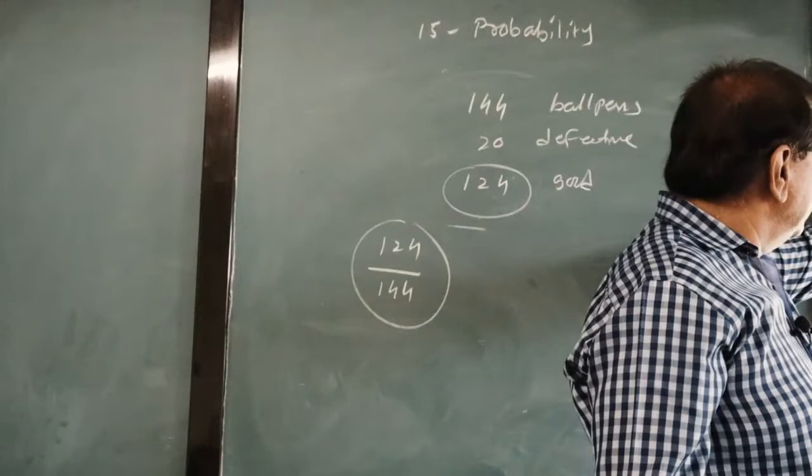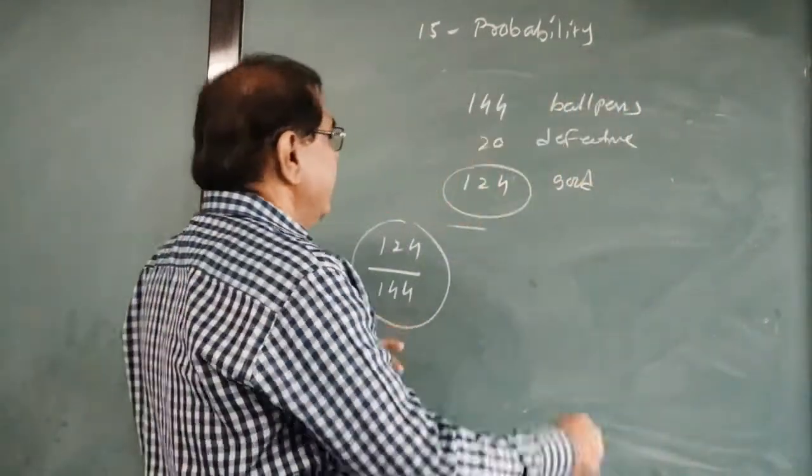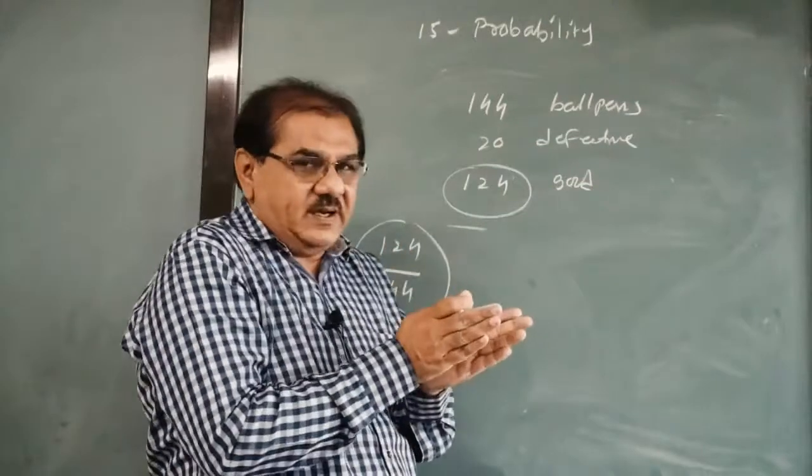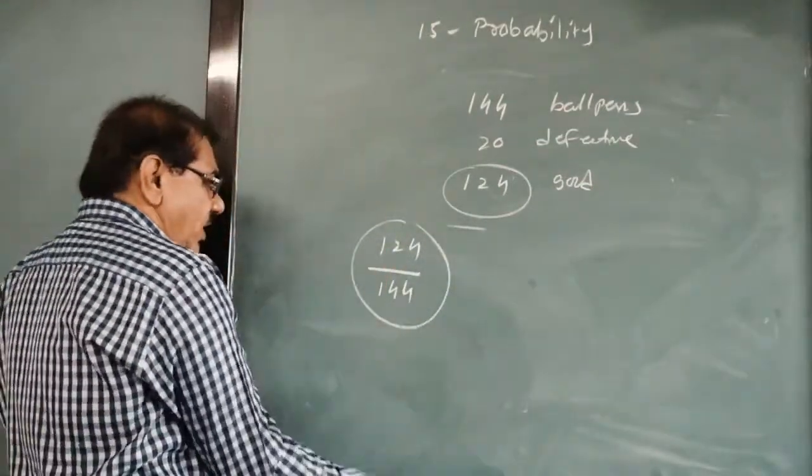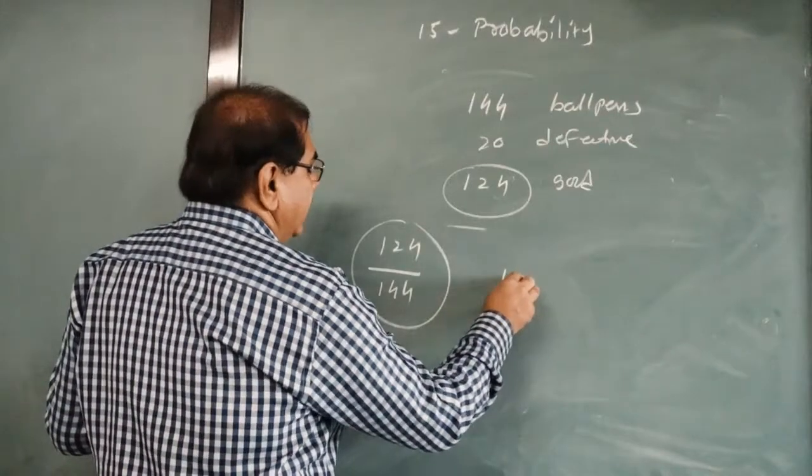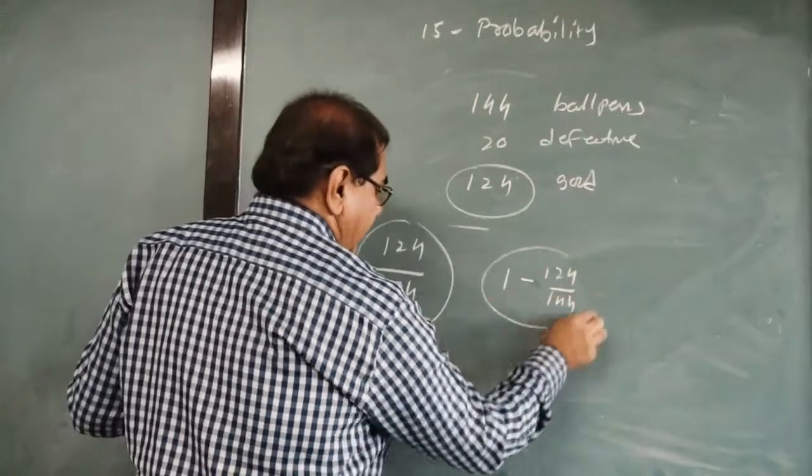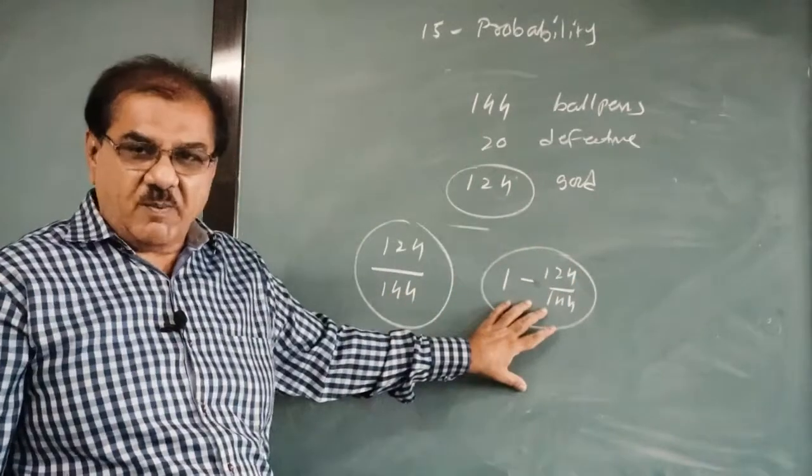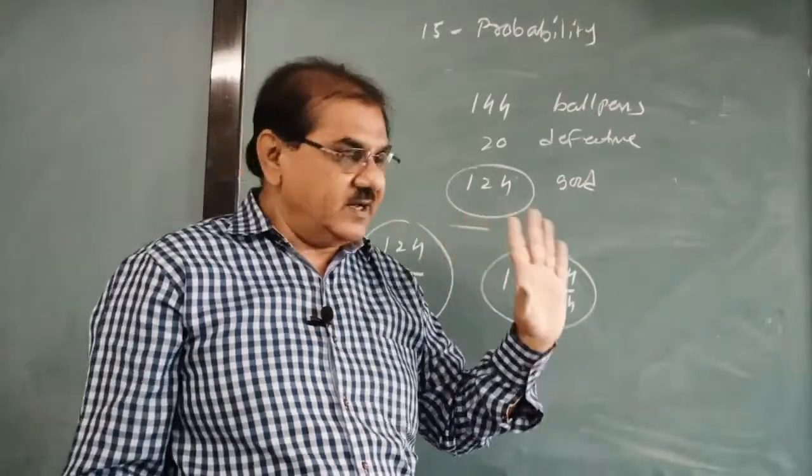Question second is what is the probability that she will not buy the pen? Now you can check, either buy the pen or either not buy the pen. So they are complementary events. So for not buying a pen, it is 1 minus 124 upon 144. So ultimately how to find out a complementary event, we go for and we can find the answer very easily.